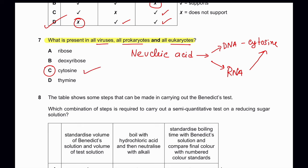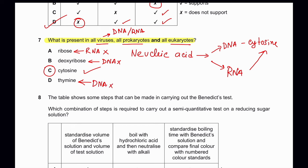The other options are incorrect because: ribose is only found in RNA, and since viruses may contain DNA or RNA, ribose may not be present in all viruses. Deoxyribose is only present in DNA, so it can also be wrong. Thymine is only present in DNA and not in RNA, so thymine is also cancelled out. However, cytosine is contained by both RNA and DNA. So C is the correct answer.